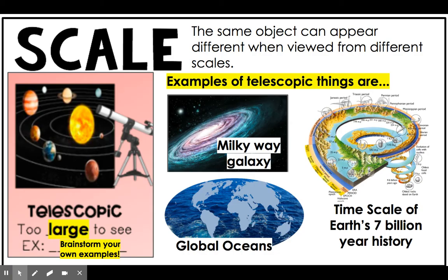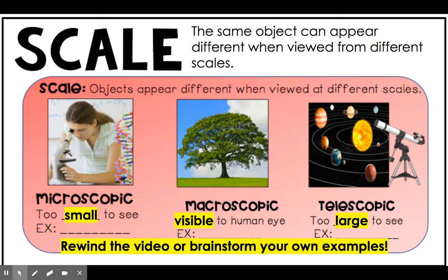Scale can also apply to time. Seven billion years of history that Earth has been around can be a really hard thing for us to wrap our head around, because our human lifespans are on the scale of 100 years, whereas 7 billion years is a very different scale than what we are used to interacting with. So scale can apply to size, and it can also apply to time. In summary, scale can be microscopic, macroscopic, or telescopic. Make sure you have an example of each of these scales recorded in your graphic organizer.